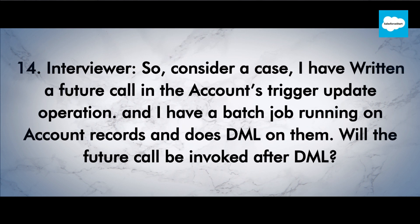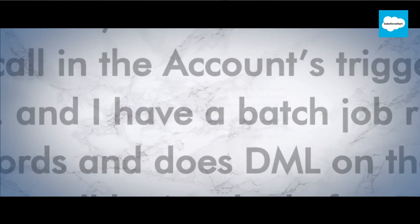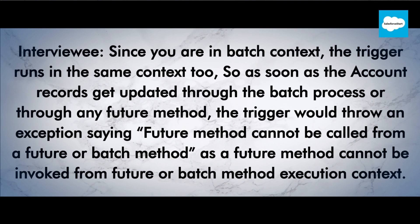Interviewer: Consider this case — I have written a future call in the accounts trigger update operation, and I have a batch job running on account records doing DML on them. Will the future call be invoked after the DML? Interviewee: Since you are in batch context, the trigger runs in the same context too. So as soon as the account records get updated through the batch process, the trigger would throw an exception saying: 'future method cannot be called from a future or batch method,' as a future method cannot be invoked from a future or batch execution context.